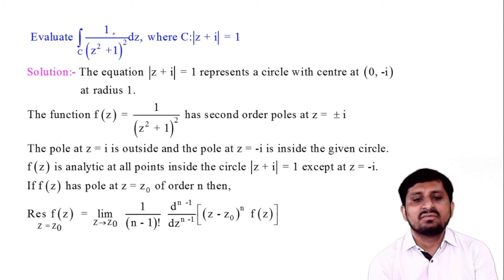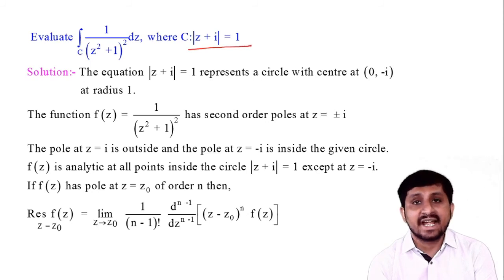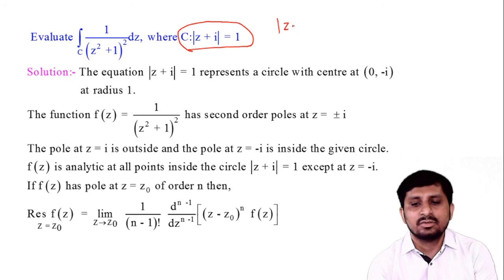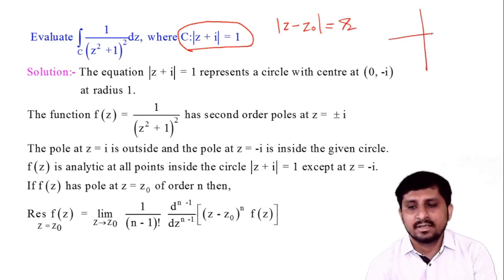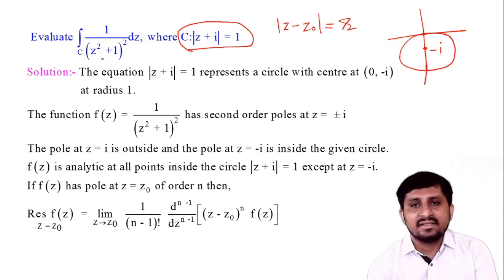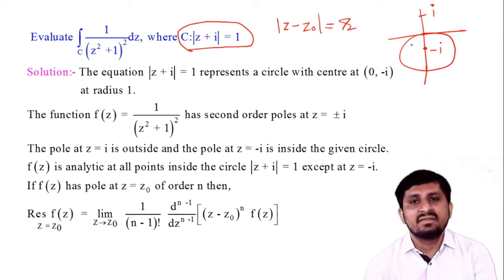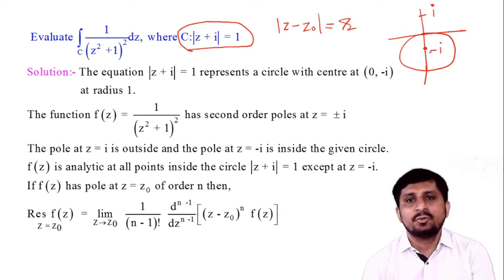Next example: evaluate the integration of 1/(z²+1)² dz where C is |z+i|=1. Comparing with |z−z₀|=r, the center is z₀=−i and radius 1. Now z²+1 = (z+i)(z−i), so f(z) = 1/(z²+1)² has second-order poles at z=±i. The pole z=i is outside C and z=−i is inside C, so we only find the residue at z=−i.